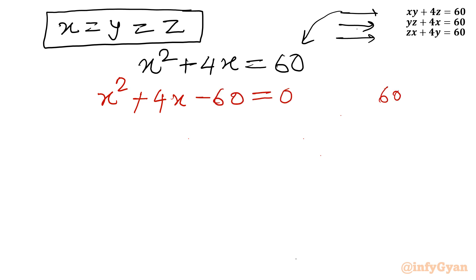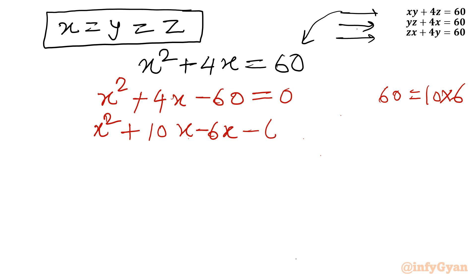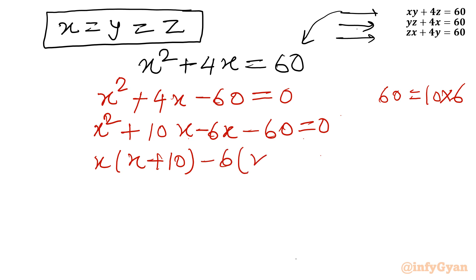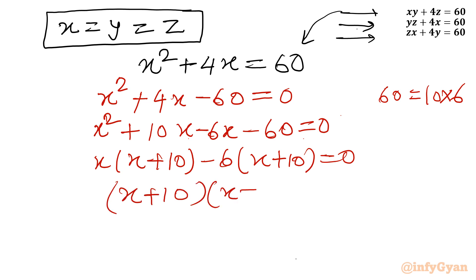Now 60 equals 10 times 6. Using the factorization method I can write: x squared plus 10x minus 6x minus 60 equals 0, so x times x plus 10 minus 6 times x plus 10 equals 0, giving x plus 10 times x minus 6 equals 0. So from here x equals negative 10, and x equals 6.